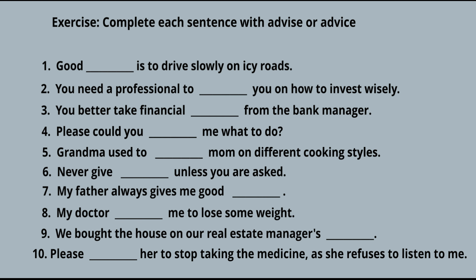Now let's see the exercise. Complete each sentence with 'advise' or 'advice' — that is, we have to see if a verb or a noun comes there. First: 'Good ___ is to drive slowly on icy roads.' The answer is 'advice,' because we already have the verb in the sentence and we need a noun — a piece of information or guidance. 'Good advice is to drive slowly on icy roads.'